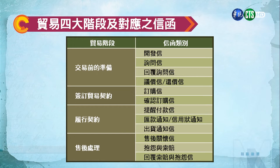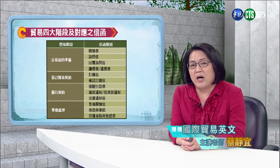這門國際貿易英文主要聚焦在雙方的溝通，範疇在出口國跟進口國中間的五條直線箭頭，以及相對應信函活動的溝通階段。基本上可以歸類成四個不同的階段：第一個是交易前的準備，包含開發性、詢問性等；第二階段是簽訂貿易契約；第三是履行契約；最後是出貨後的售後處理。以及各自不同階段裡面相對應的信函，先讓各位有一個概念。